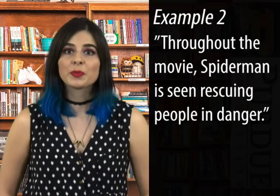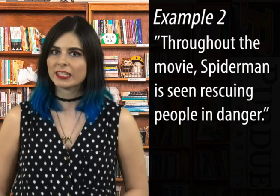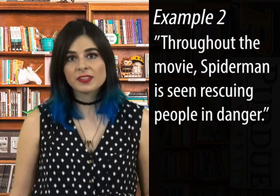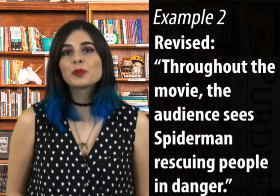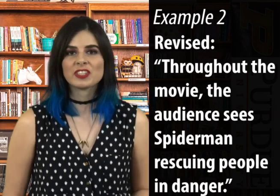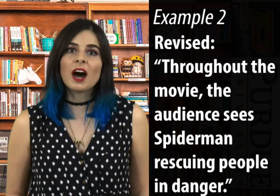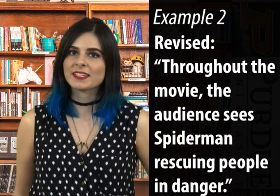Now, here's a question: what if the subject does not appear in the sentence? For instance: 'Throughout the movie, Spider-Man is seen rescuing people in danger.' Here we have an implied subject. The verb 'is seen' refers to someone or something seeing — so who's doing that? A member of the audience, of course. Rewrite this sentence with an agent performing the action and it looks like this: 'Throughout the movie, the audience sees Spider-Man rescuing people in danger.'